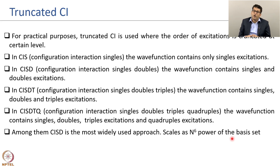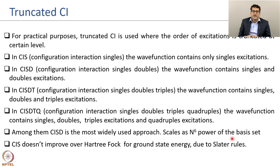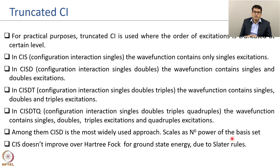Comparing with MP2, which scales as N to the power of 5 in the absence of any approximation. CIS does not improve over Hartree-Fock for ground state energy because of the Slater rules and Brillouin's theorem — the singly excited configurations cannot interact with the ground state configuration, so CISD cannot give any improvement over the Hartree-Fock energy. However, CIS can change the wave function and properties, and CISD can give excited states, so when we discuss excited states, CISD will be the zeroth-order dominant configuration.